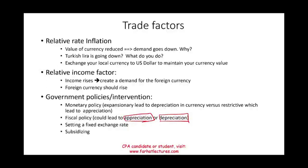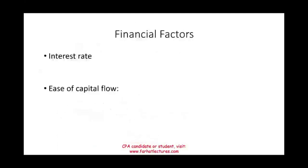Governments can also set fixed exchange rates, subsidize certain products, encourage exports by weakening their currency, or encourage imports by strengthening their currency. They can place trade barriers — restricting or making it costly to bring in foreign products — which reduces demand for foreign currency. All of these interventions can influence the exchange rate.